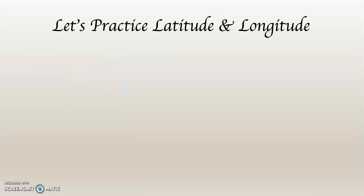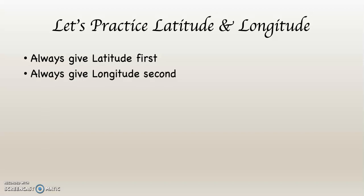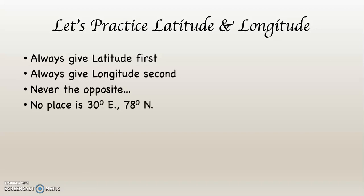Let's practice latitude and longitude a little, shall we? When you are using latitude and longitude — the geographic grid — always give latitude first. Always give longitude second. It is never the opposite way. There is no place that is at 30 degrees east and 78 degrees north because latitude always has to be first. Longitude always comes second.